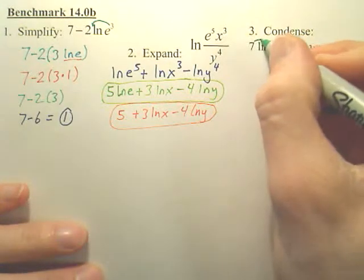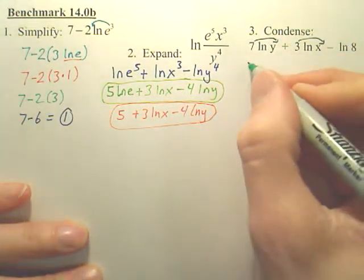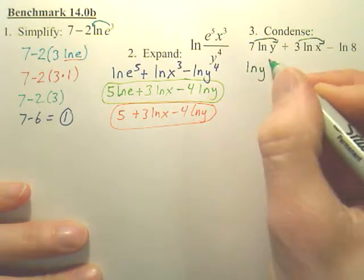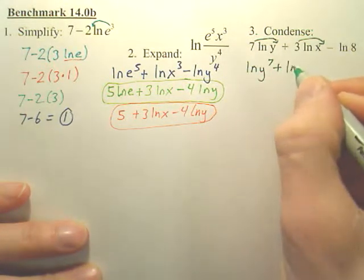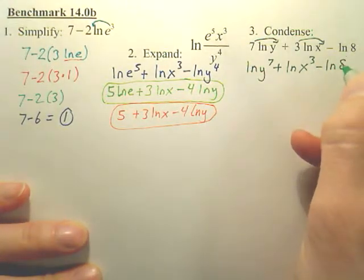So the first thing we do is take all these numbers up front and move them up front, move them up top. So I got ln y to the 7th plus ln x to the 3rd minus ln 8.